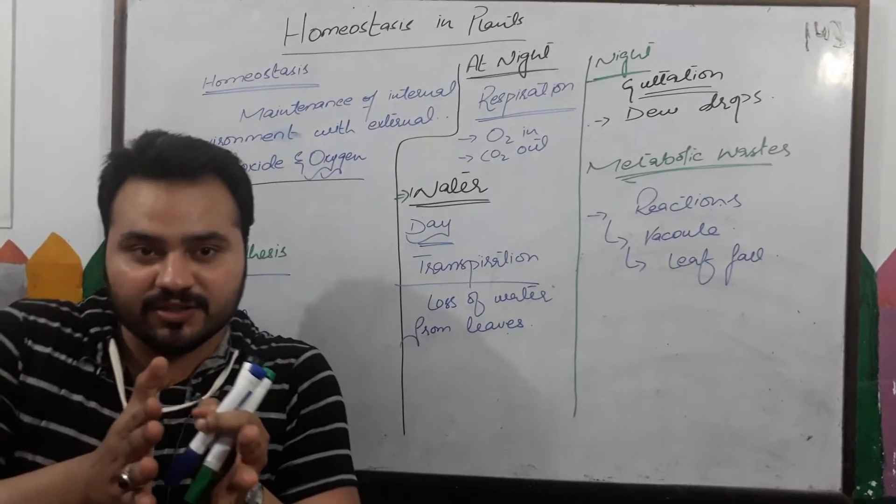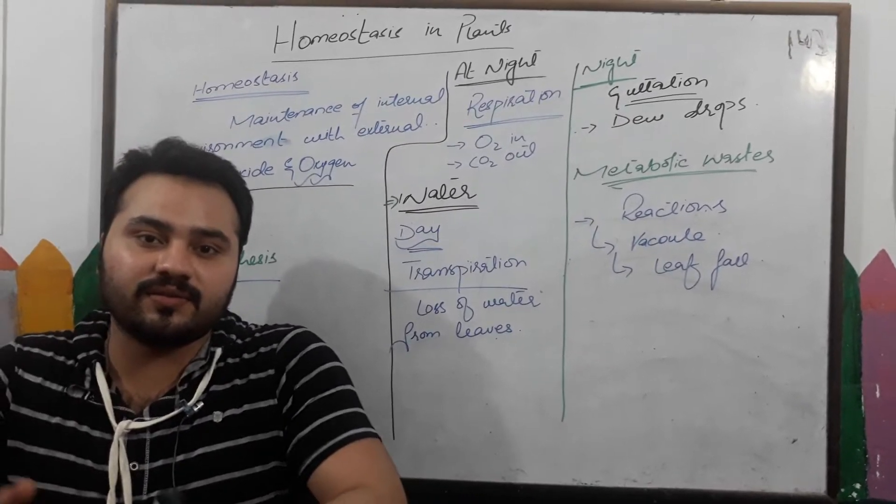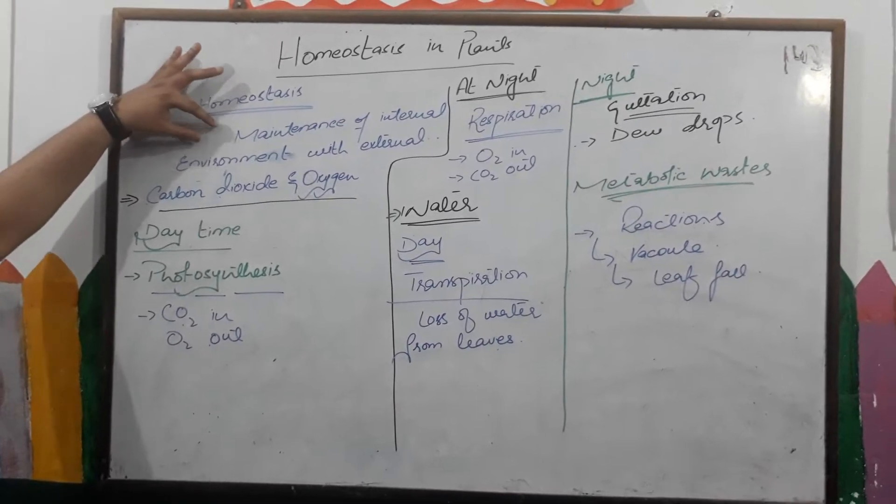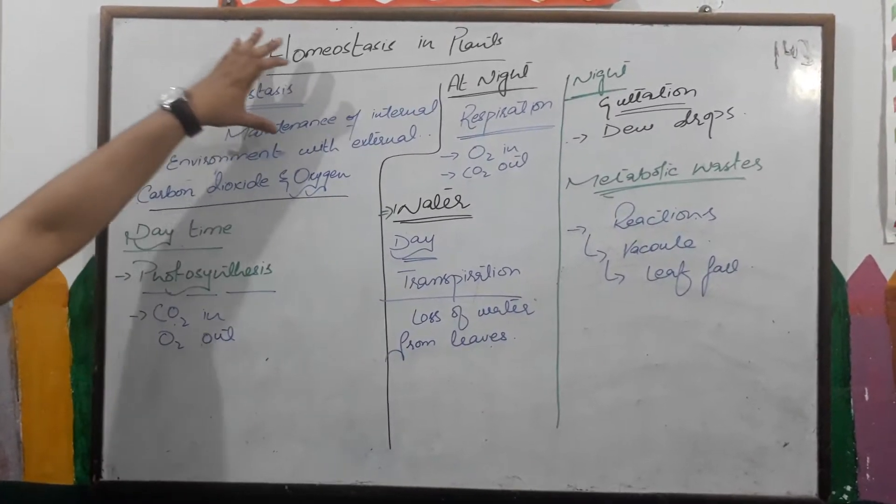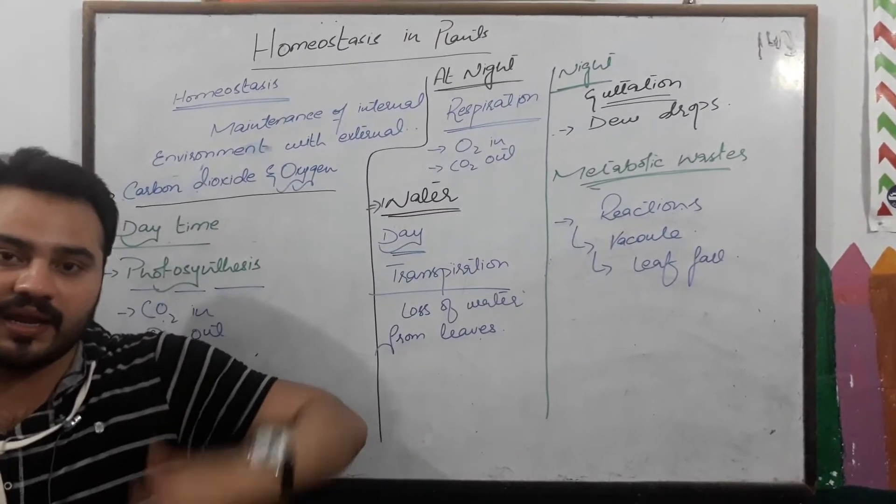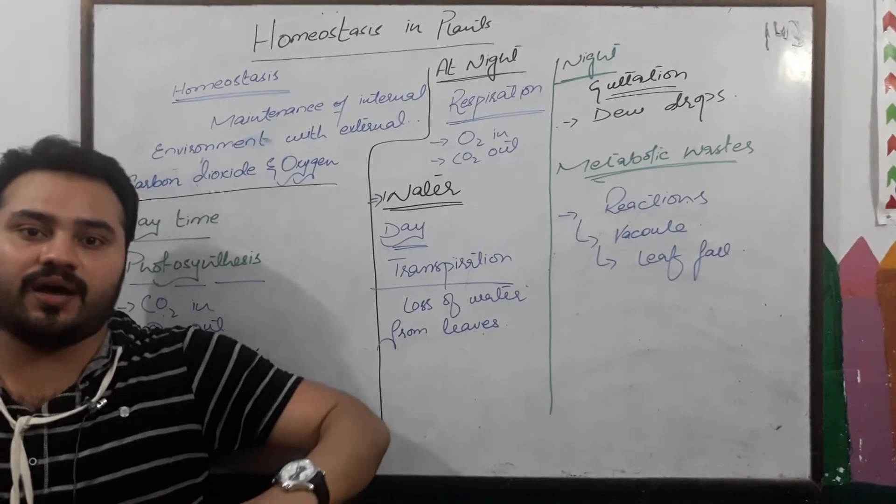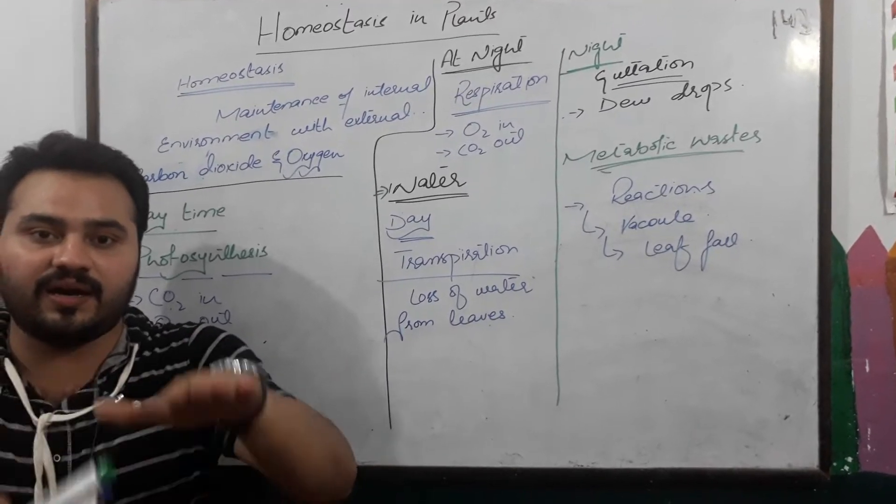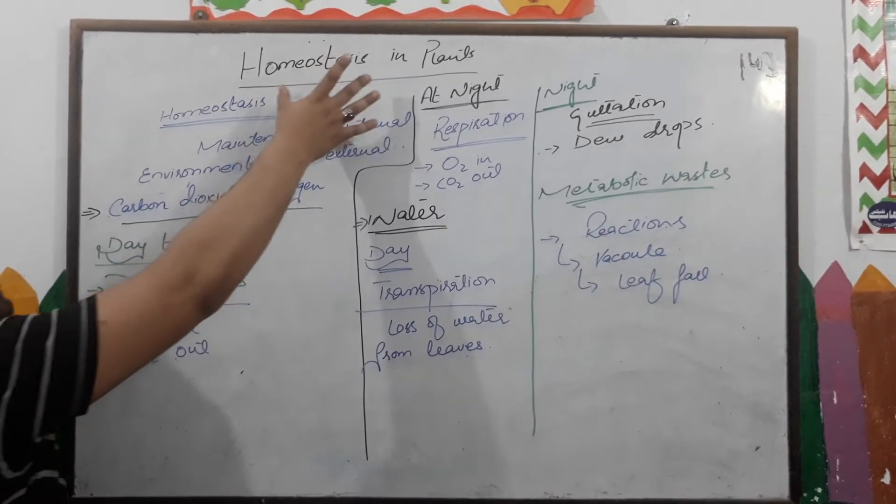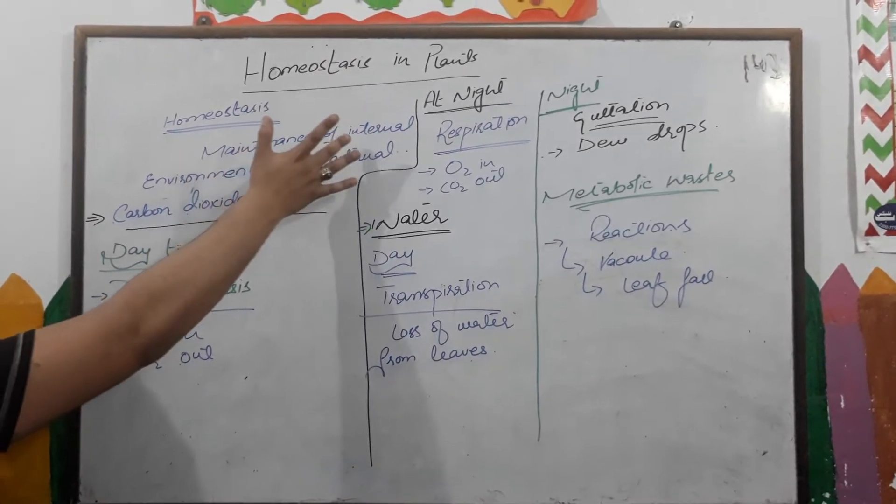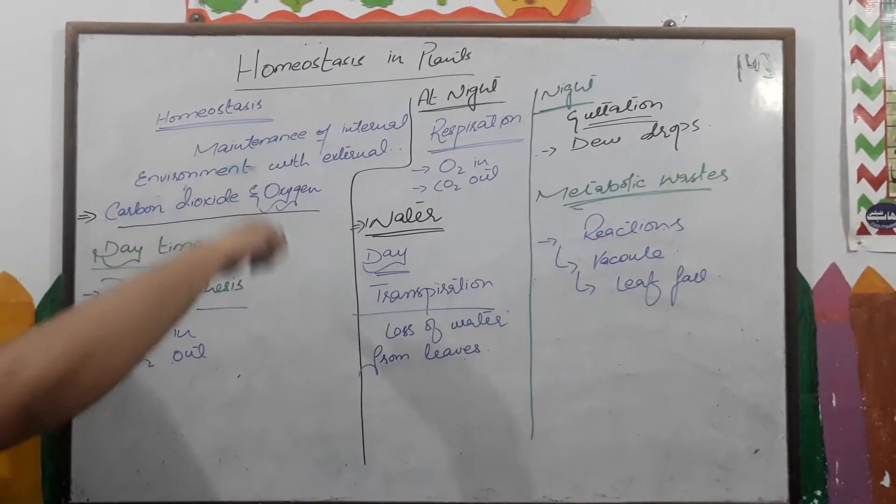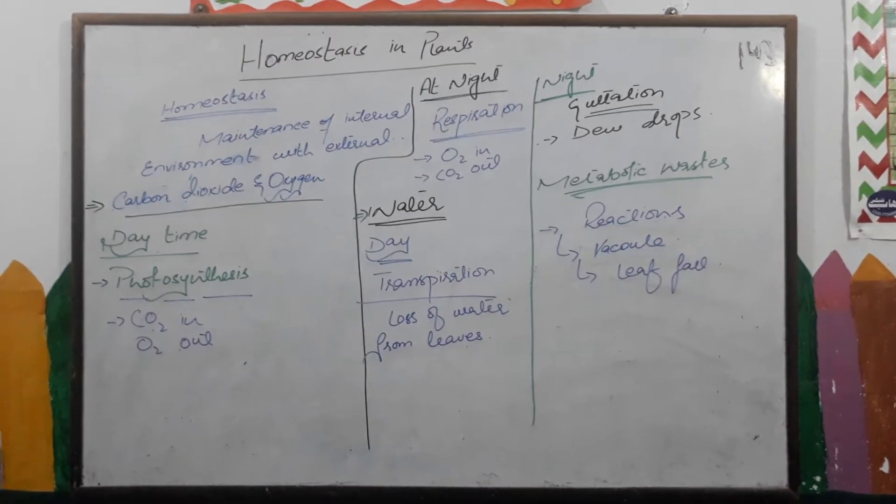Homeostasis is the maintenance of internal environment with the external body, the maintenance of internal environment of the body according to the external environment. Now how can plants maintain their internal environment with the external, or how can plants do homeostasis?